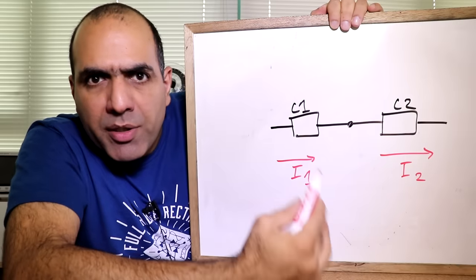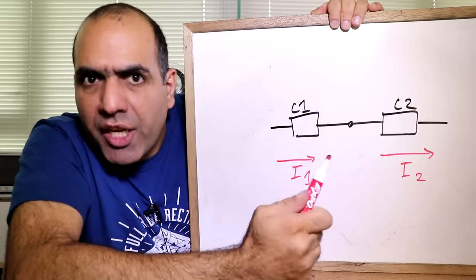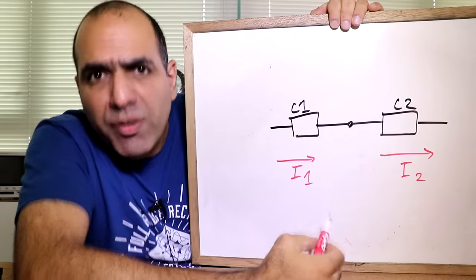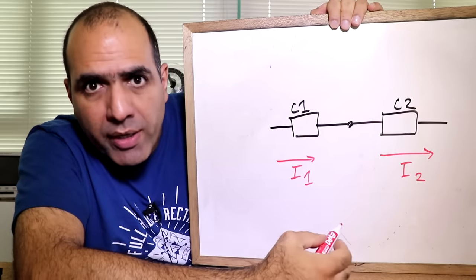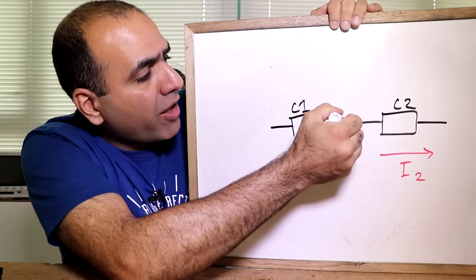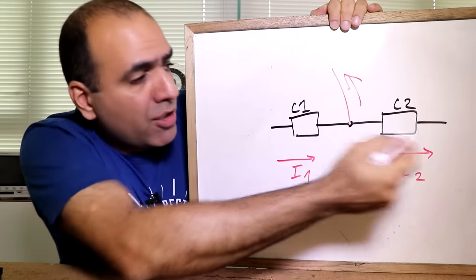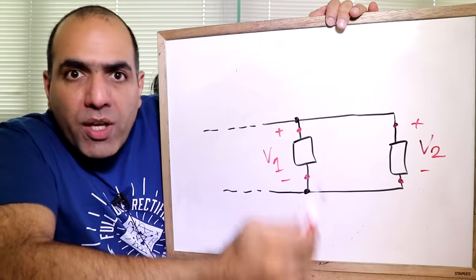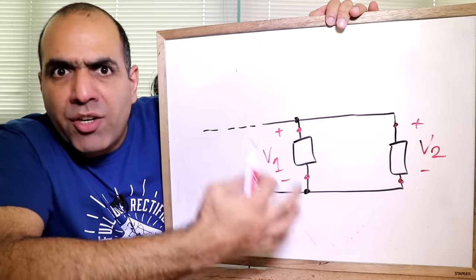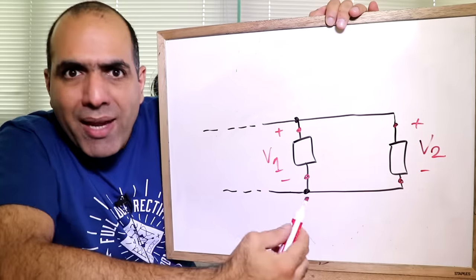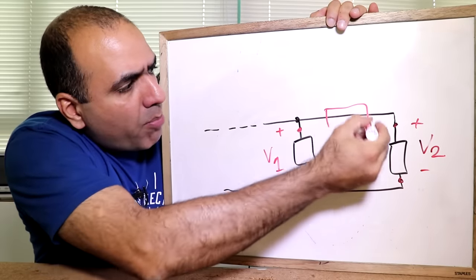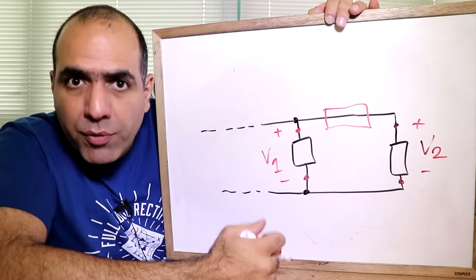In any case, the properties of series and parallel circuits never break. If you measure two different currents between series components, it must mean that the current is leaking out of the branch through some hidden component, and these two are not actually in series. Or if you measure two different voltages across parallel components, it means that they are not in parallel, and there must be a hidden component between them you didn't account for.